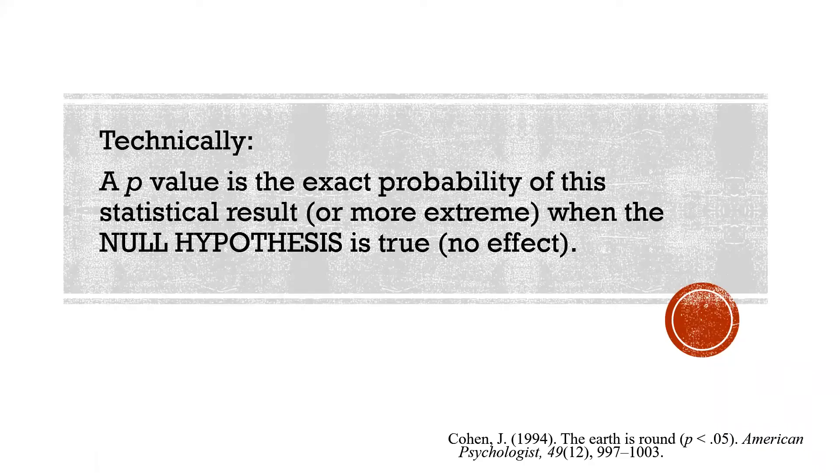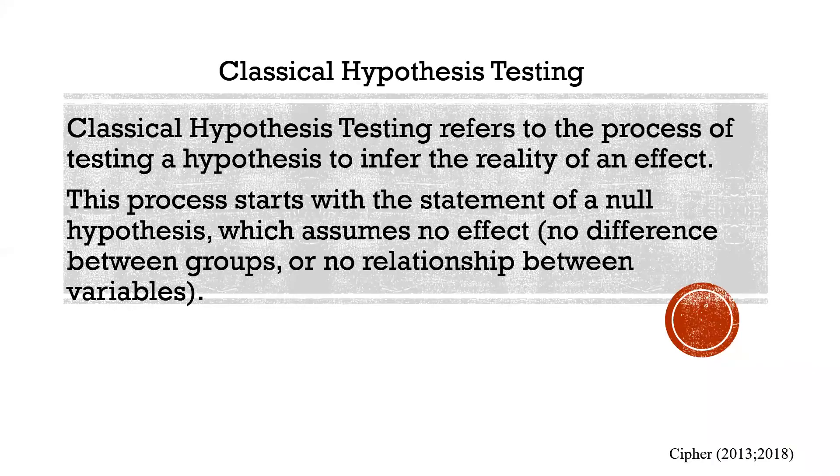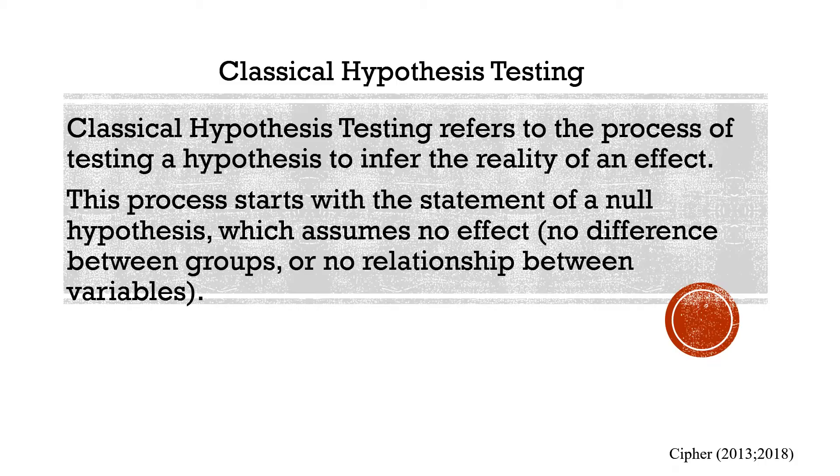So, p is short for probability, and the lower the actual p-value, the lower the chance that the null hypothesis is true. The p-value is part of a greater process called the classical hypothesis testing process where a hypothesis is stated and tested to infer the reality of an effect. This process starts with a statement of a null hypothesis, which assumes no effect.